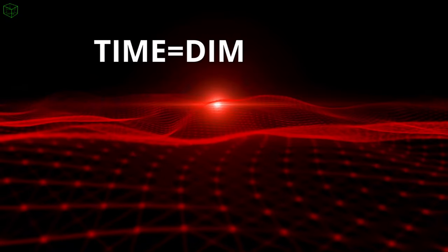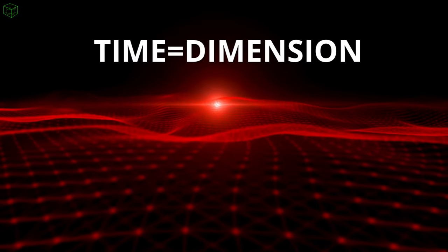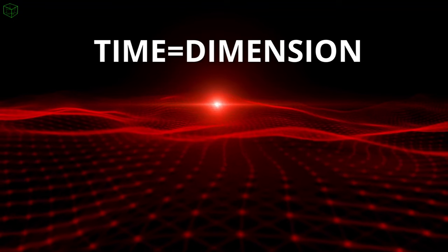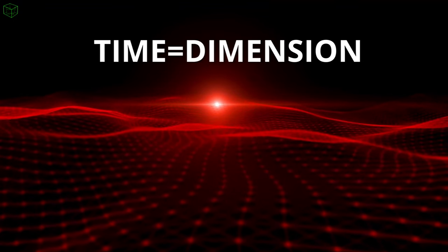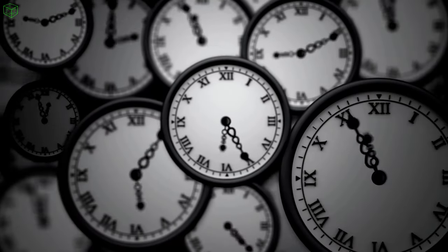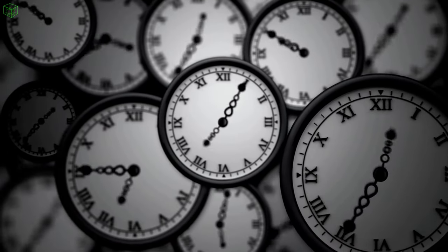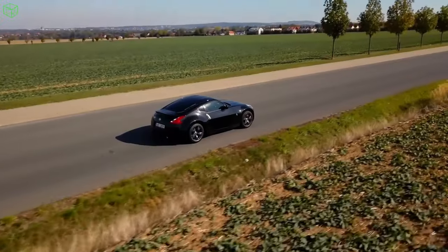The interesting thing about the theory of relativity is that it was, in a way, the first time in physics that time was defined as something, in this case, a dimension. Before relativity, time was merely the difference between two events happening. To clarify this, let's turn to classical physics and discuss the speed of a car.